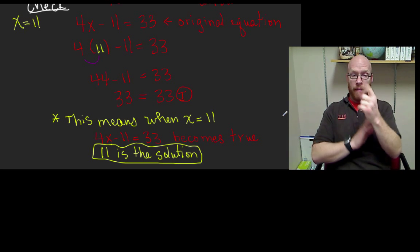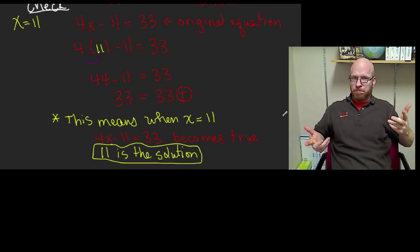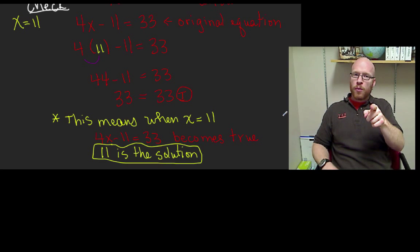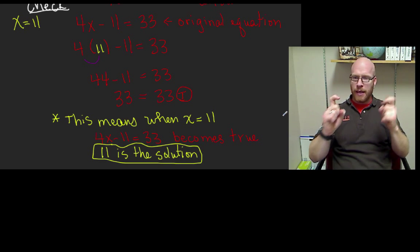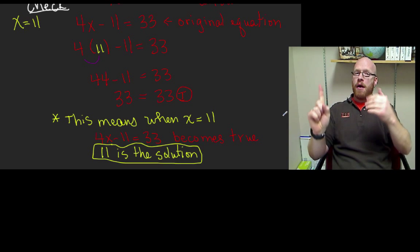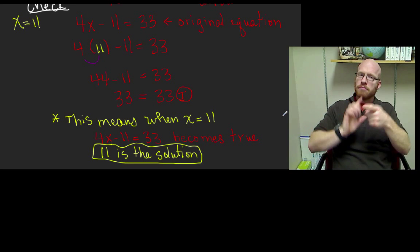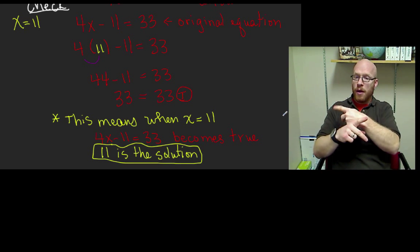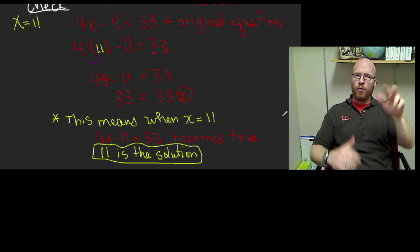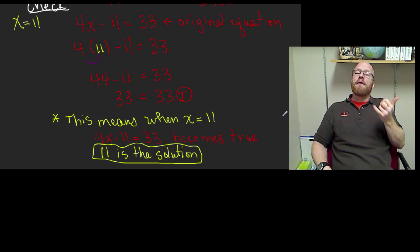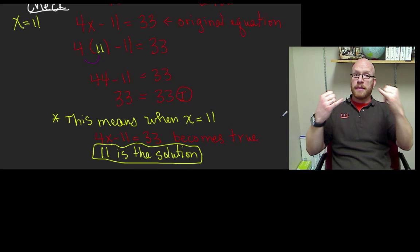X can be anything. Once we replace X with 11, we need to figure out if that equation is true. Without the number there, there's no truth value. But there is one answer that, if we replace it where X is, the equation is true. So 4 times 11 minus 11 is 33 — that's a true statement.